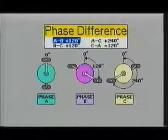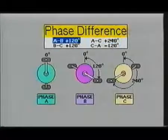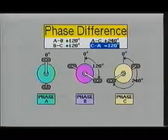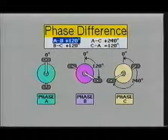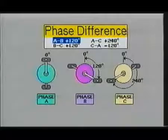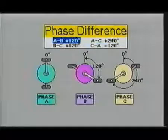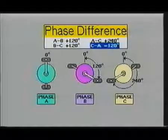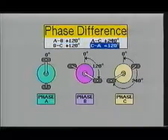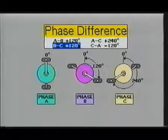To illustrate the effect of three phase electricity, we will use three sets of bicycle pedals. Each pedal is set 120 degrees from the other two pedals. As you can see, the front pedal of phase A starts at zero degrees. The front pedal of phase B starts at 120 degrees and the front pedal of phase C starts at 240 degrees.